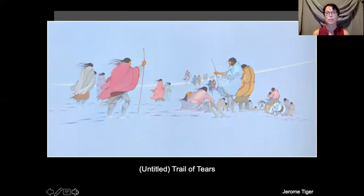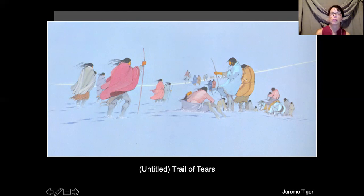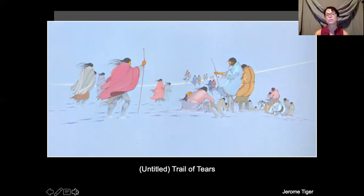In this picture, Jerome Tiger has painted "Untitled Trail of Tears" in soft colors that create a quiet and sad mood. You can see that it's cold — their hair is blowing, their blankets are flapping in the wind, and they're standing in snow. Many people died on this journey because they didn't have enough food and didn't have the right clothing. That is why this horrible time is called the Trail of Tears.